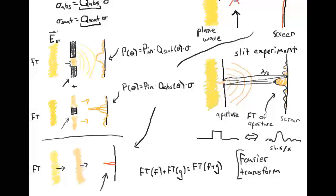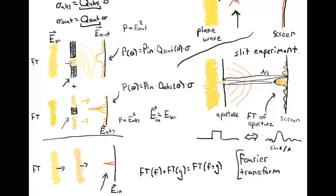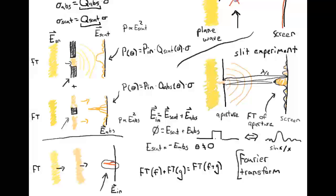If E_in was the original electric field, we end up with some scattered electric field E_scat on the screen, with power proportional to E_scat squared. Similarly, the absorbed electric field E_abs gives power proportional to E_abs squared. From the linearity of these systems, E_in equals E_scat plus E_abs. But for any angle except theta equals zero, the total E is zero, meaning E_scat equals negative E_abs for theta not equal to zero.